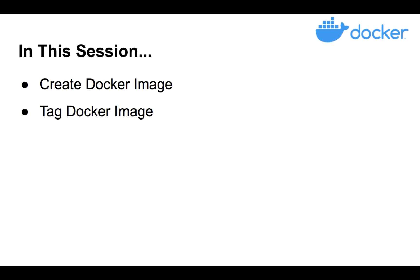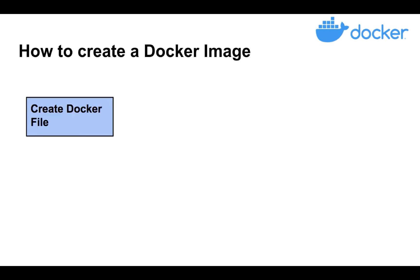In the previous lecture, we downloaded a few Docker images from Docker Hub and used those images to create containers. In this lecture, let's create our own image. To create an image, we need a Dockerfile, and what this Dockerfile contains is a bunch of stuff that is required to build the image.